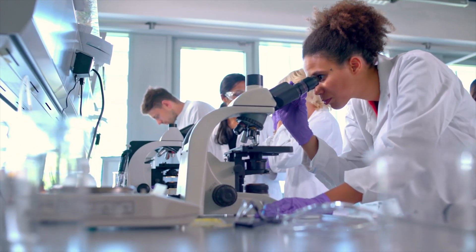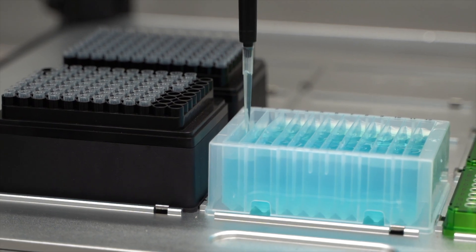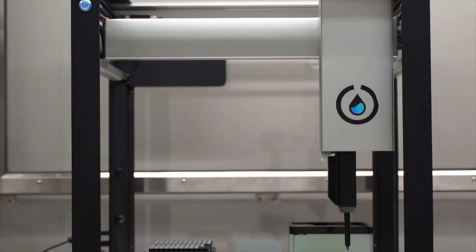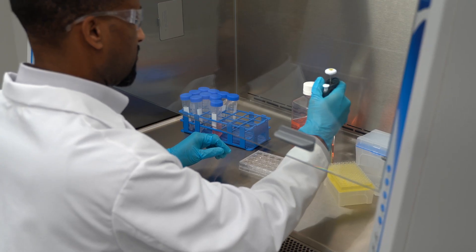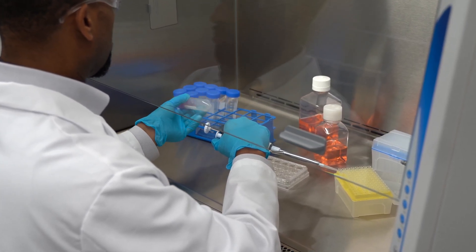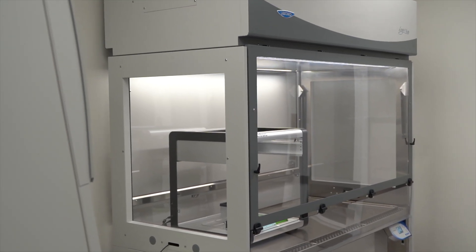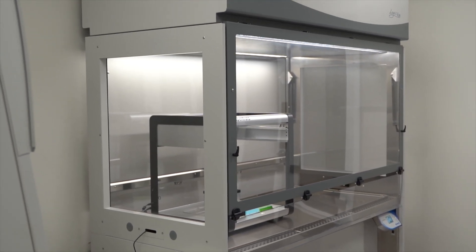Laboratories handling biohazardous samples with automated instruments such as liquid handlers or cell sorters require larger Class II biosafety enclosures. Traditional biosafety cabinets are built for researchers, so they don't have features required for large instruments such as a spacious interior or multiple access points into the enclosure.